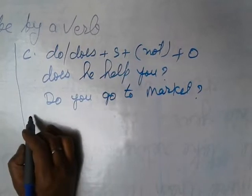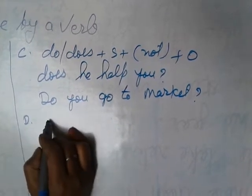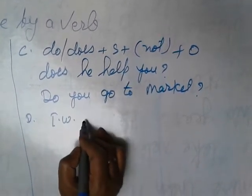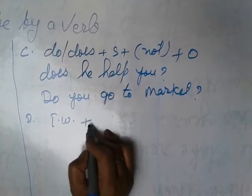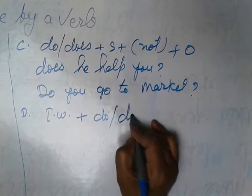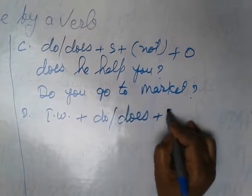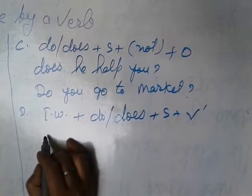This one is interrogative sentence. And next interrogative sentence that is used with interrogative word - IW: where, what, when, why, which, who - plus do/does, subject, V1. What does he know?